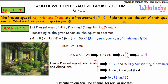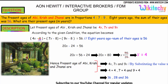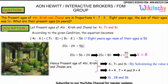According to the given condition, 8 years ago the sum of their ages was 56. So: (4x − 8) + (7x − 8) + (9x − 8) = 56. We get 20x − 24 = 56. So 20x = 56 + 24 = 80. Therefore x = 80 divided by 20, and we get x = 4.